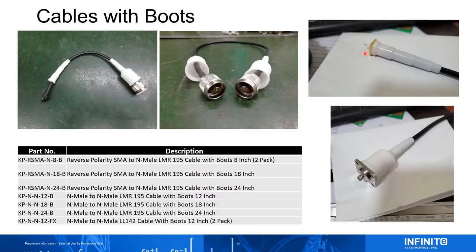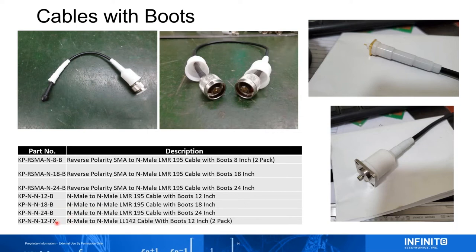Now for new products: we're very excited to have LMR cables with boots in stock — end-male to end-male and end-male to RPSMA, in different sizes. We have a two-pack for 8-inch cables, which pair with a product I'll show shortly. For typical KP sectors you want 18 to 24-inch cables; if mounting the radio close to the sector, a 12-inch works. We also have the 12FX cables with boots for our 11 GHz parabolic dish, compatible with the Ubiquiti 11FX.